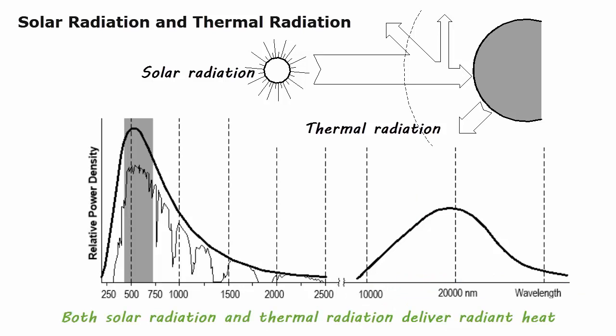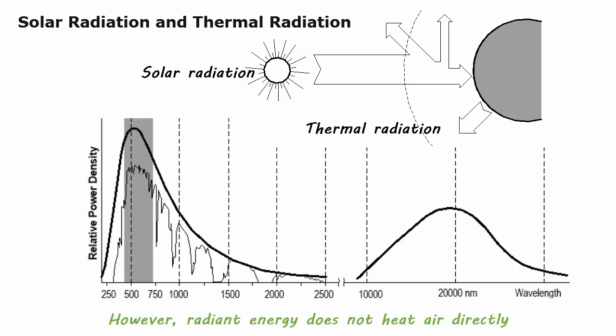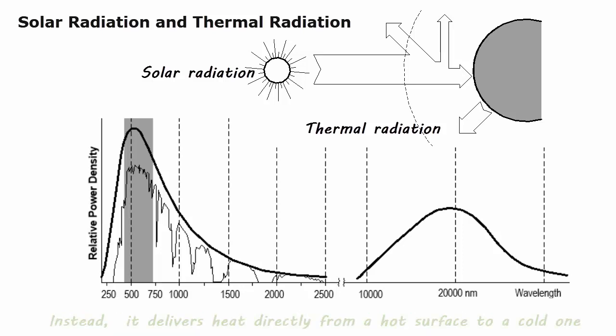Both solar radiation and thermal radiation deliver radiant heat. However, radiant energy does not heat air directly. Instead, it delivers heat directly from a hot surface to a cold one.